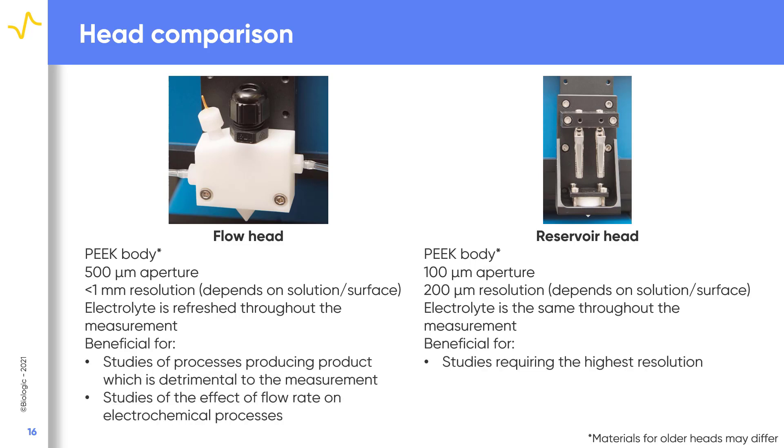The SDC flow head is a good choice for studies of processes producing products detrimental to the measurement of interest, as well as studies where the effect of flow rate on the electrochemical process is of interest. The SDC reservoir head is of interest when the highest resolution SDC measurements are needed.